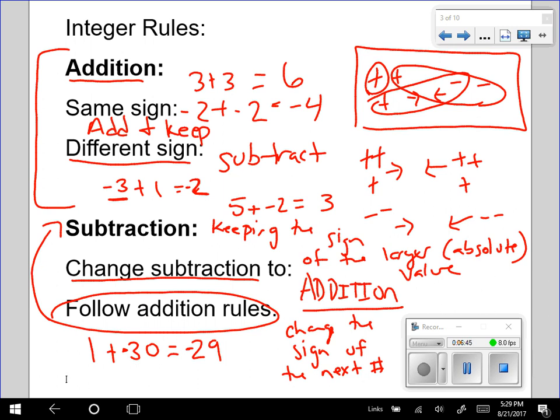Some of you may be thinking, well, I've subtracted my whole life. For example, I've done 10 minus 7. Why would I change that to addition? You don't have to, but I want to show you that it works. What is 10 minus 7? Well, of course, that's 3. But you could also say 10 plus negative 7 by changing subtraction to addition, changing the sign of the next number. So 10 plus negative 7, we go back up to our addition rules.